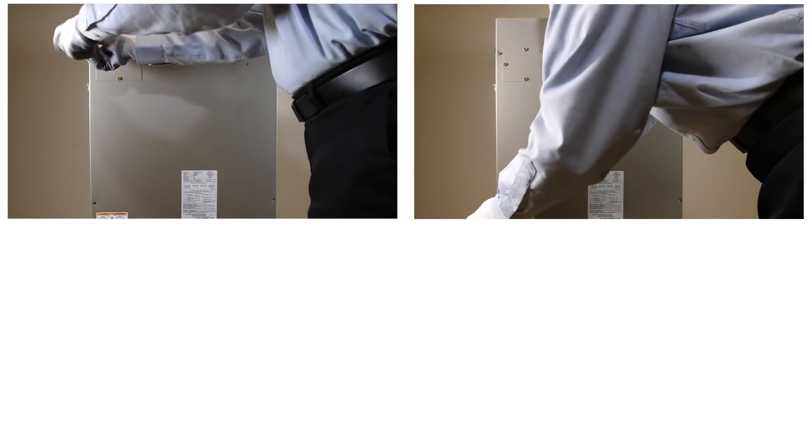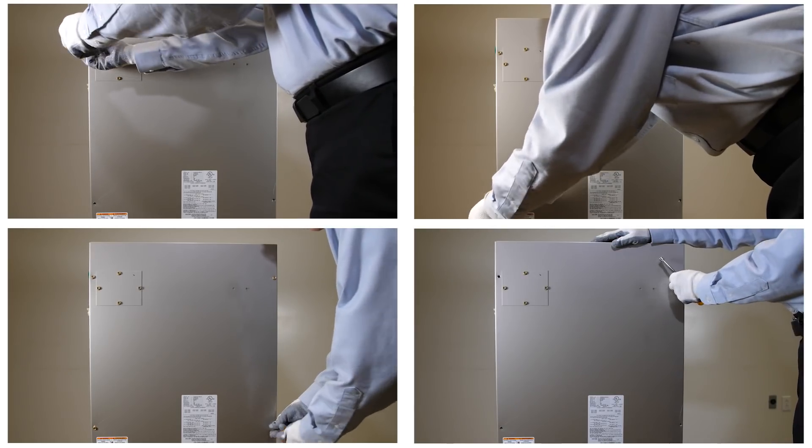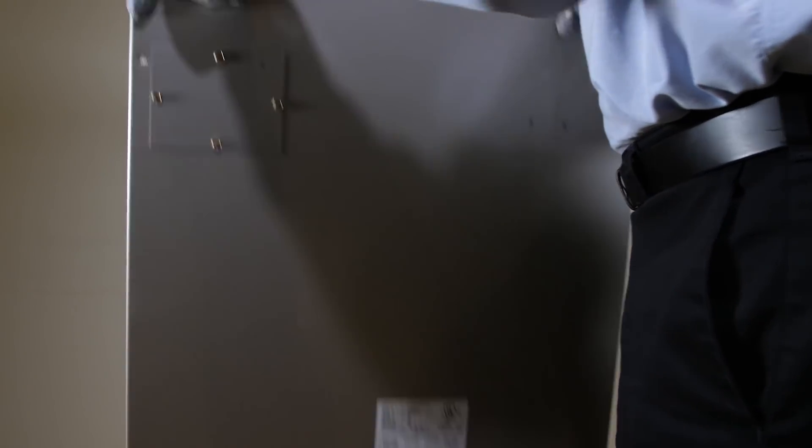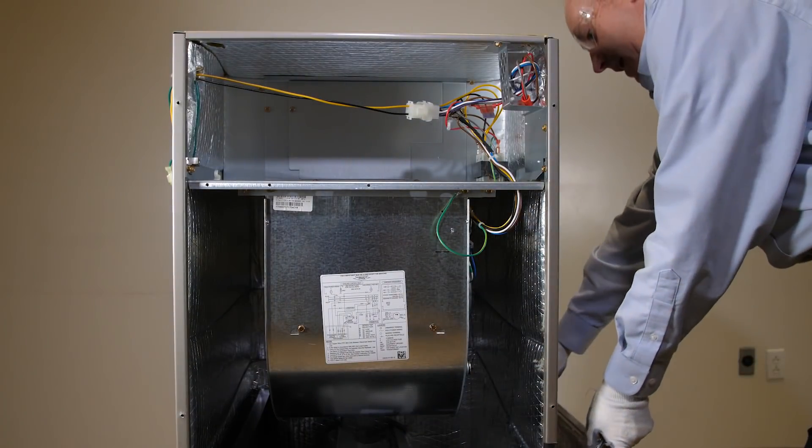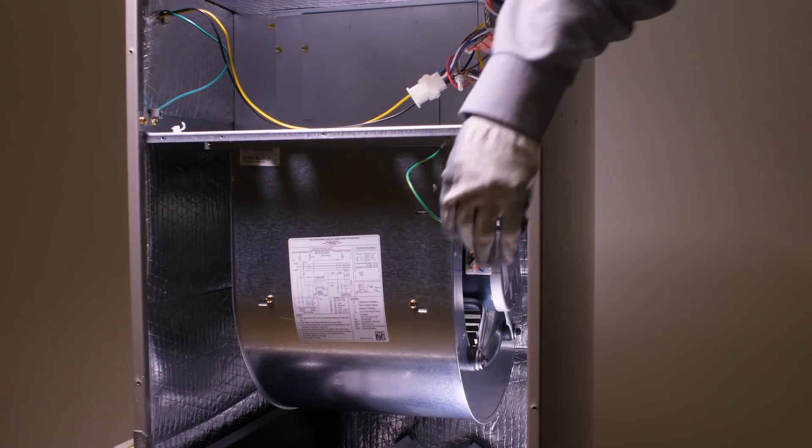First, disconnect power to the unit. Remove the four screws that attach the upper blower door. Unplug the harness, which contains the power and signal connectors to the control module.